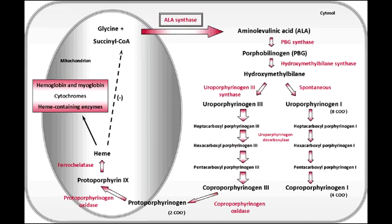What is the name of the enzyme that converts Delta-Aminolevulinic Acid to Porphobilinogen? The enzyme that catalyzes this reaction is Delta-Aminolevulinic Acid Dehydratase. Delta-Aminolevulinic Acid Dehydratase is inhibited by lead poisoning.